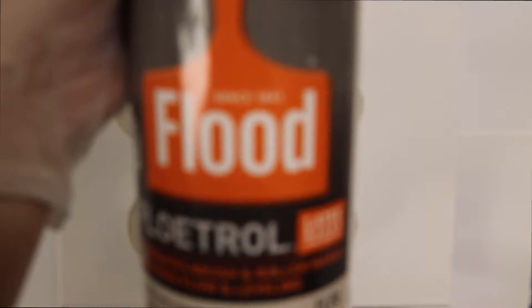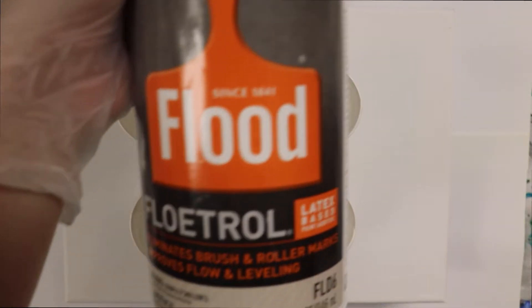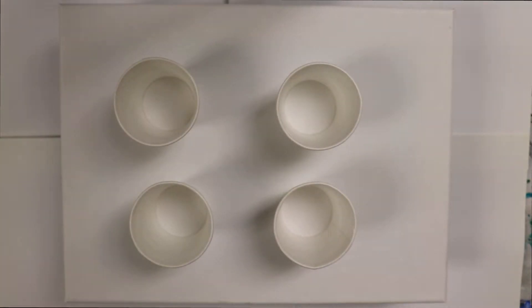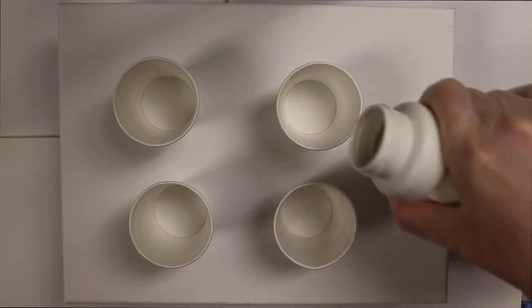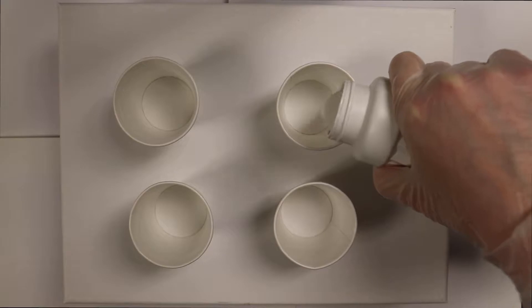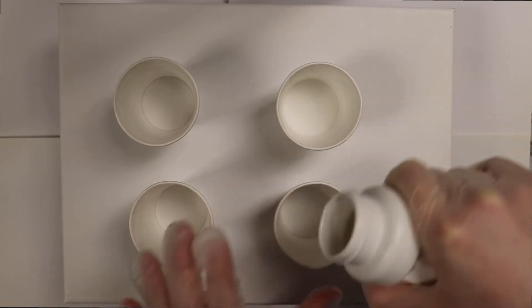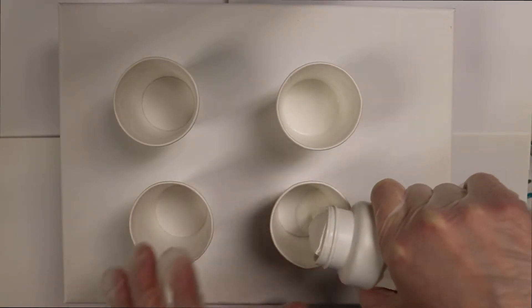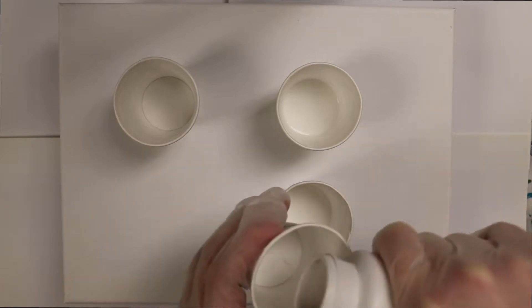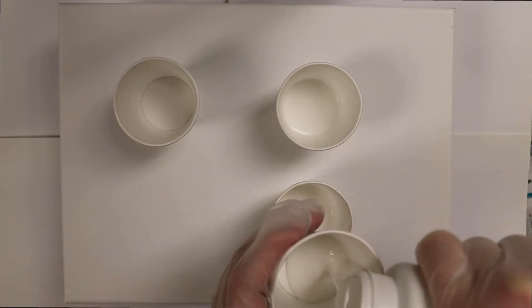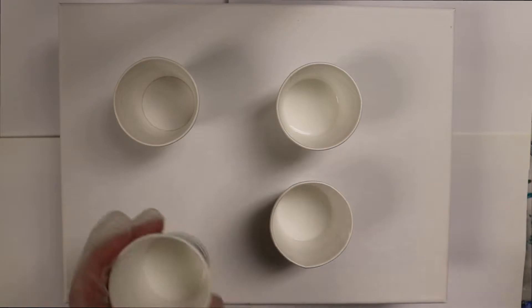The first step is to take your bottle of Flood Floetrol and just pour a little bit in each cup, just enough to give something to mix your color with. You don't want to pour all of your Floetrol in right away and then put your paint in because it won't mix as smoothly and you might have little chunks of paint floating around and you won't get that nice smooth color.